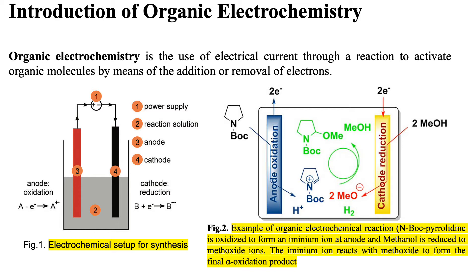Removal of electrons takes place at the anode, which is called oxidation, and addition of electrons takes place at the cathode, which is called reduction.